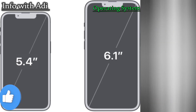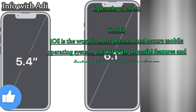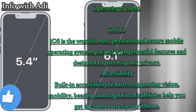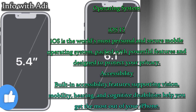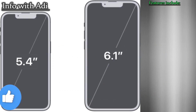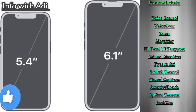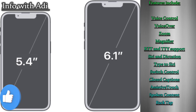Operating system: iOS 15 — the world's most personal and secure mobile operating system, packed with powerful features and designed to protect your privacy. Accessibility: built-in features supporting vision, mobility, hearing, and cognitive disabilities. Features include Voice Control, VoiceOver, Zoom, Magnifier, RTT and TTY support, Siri and dictation, Type to Siri, Switch Control, closed captions, AssistiveTouch, spoken content, and Back Tap.